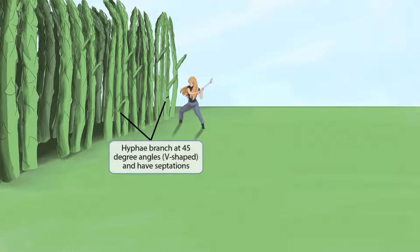If you look closely at the asparagus, you can see that there are branches coming off of the plants at relatively acute angles. This angle resembles the shape of the letter V, which is a 45-degree angle. Also, we've shown a woman cutting down one of the plants, and there is a little indentation in the trunk. This is to make you think of septations. So together, these two ideas should help you remember that the hyphae of Aspergillus branch at 45-degree angles, or V-shaped angles, and that they have septations.